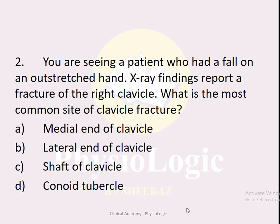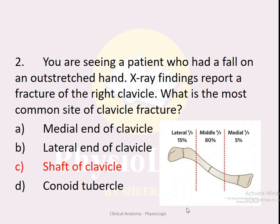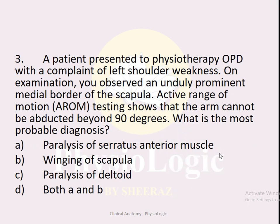MCQ number two: You are seeing a patient who had a fall on an outstretched hand. X-ray findings report fracture of the right clavicle. What is the most common site of clavicle fracture? Options: A — medial end, B — lateral end, C — shaft of clavicle, D — conoid tubercle. The correct option is C — the shaft of the clavicle, at the junction where the convex part meets the concave part.